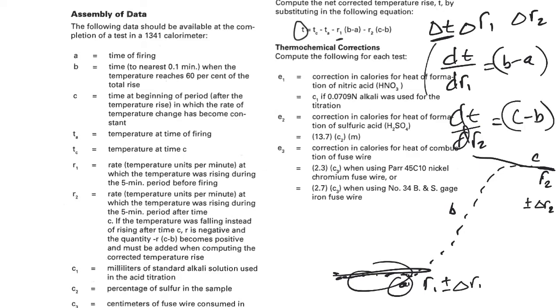And so remember that we're going to take this, we're going to square this term times the uncertainty in that parameter squared, and then add to it this value here times the error in that value squared as well. So just apply your differential error equation to determine the uncertainty in your temperature rise.